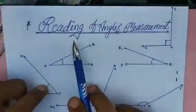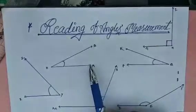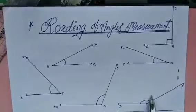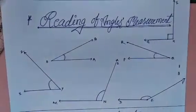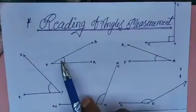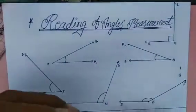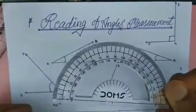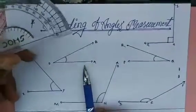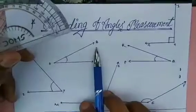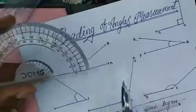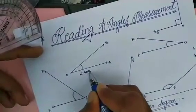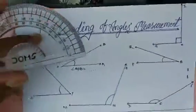The first topic is reading of angle measurements. Here you can see angles: angle AOB, angle PQR, and several more. We are going to measure these. In this topic you will learn how to measure an angle. Here I have a protractor — the same type you have in your geometry box. Let's take the first angle, angle AOB. You will write its name with the angle symbol, then AOB equals blank degrees. Now let's find its measurement.